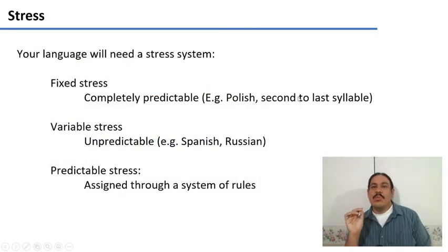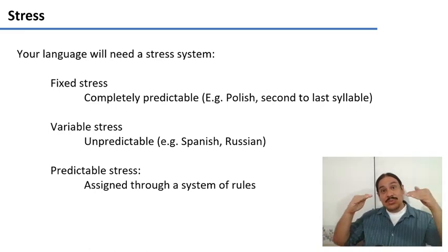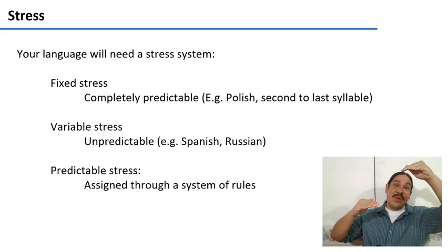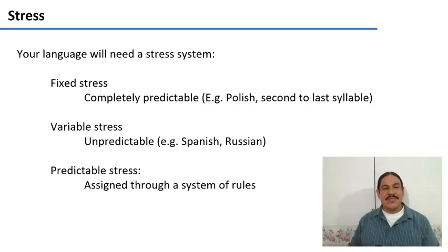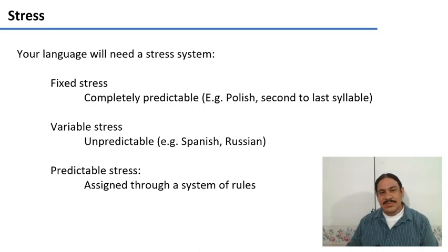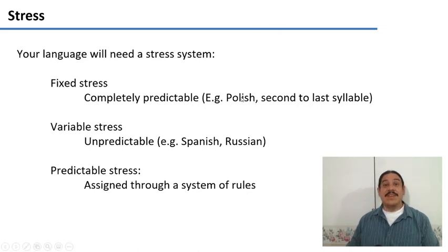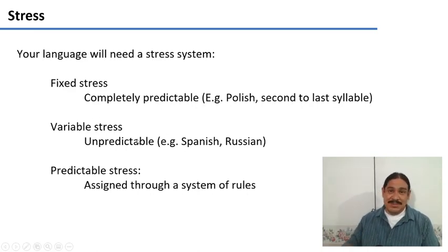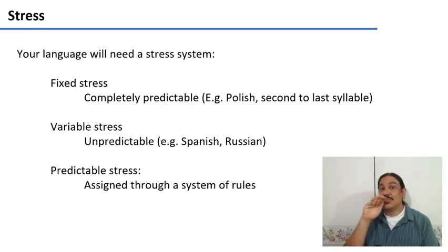Your words need syllables, but you also need a stress system to figure out which of the syllables is going to be more prominent. You can have fixed stress, which is completely predictable — like in French, where the last syllable always gets the stress, as in maison. Or like Polish, which stresses the second-to-last syllable, as in televisor. You can also have variable stress, like in Spanish or Russian, where every word just has stress and there's no way to predict it — you just need to learn it.